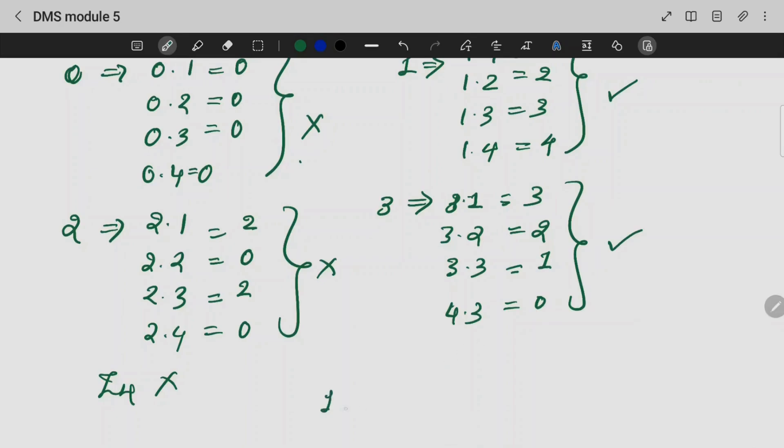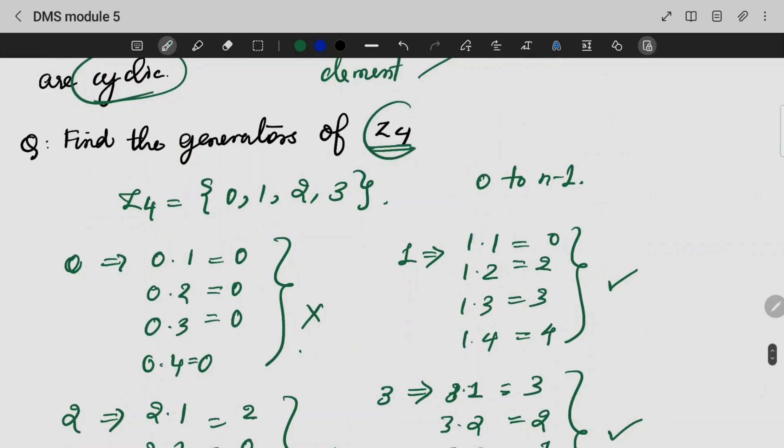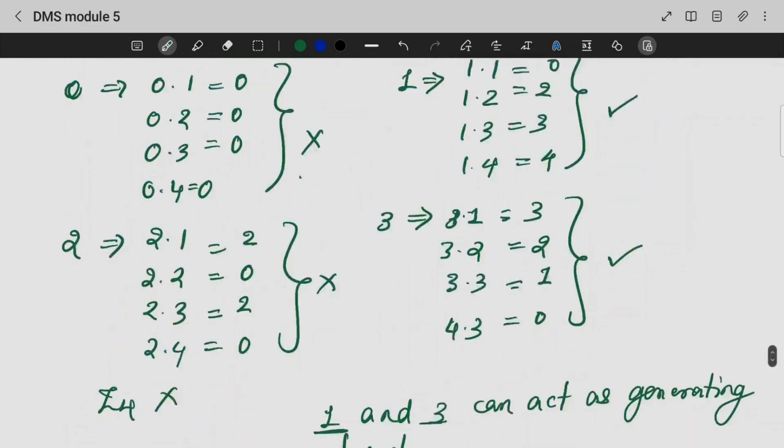Which means that the elements 1 and 3 can act as generating elements. This entire set can be derived using these two elements. For Z4, it is the modulo operation. So here we have addition modulo 4. So we are able to create the generators.